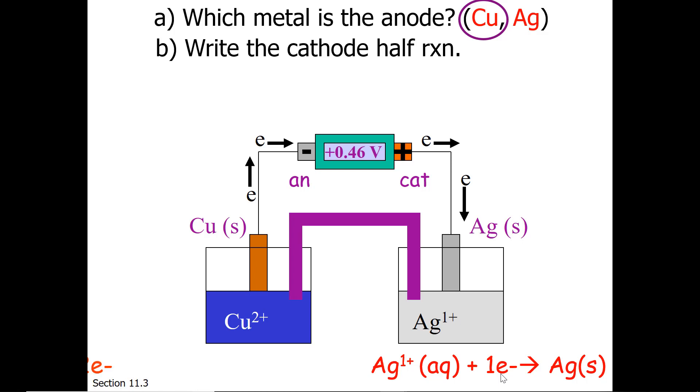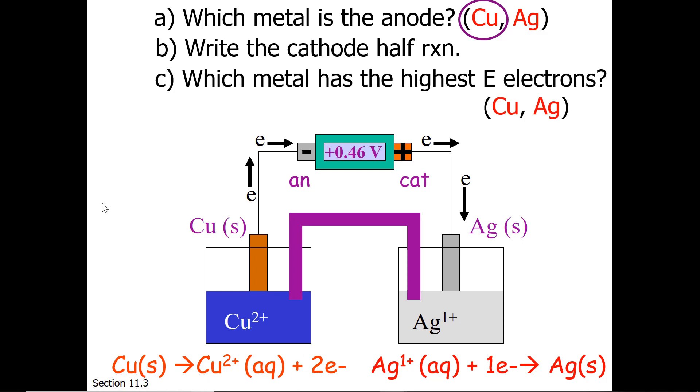Just for completeness, here is the reaction going on at the anode. It is an oxidation. Our last question is, which metal has the highest energy electrons? This would be the metal that gives the electrons away. So that would be copper, because we can see that our copper is giving up the electrons to the other compartment.